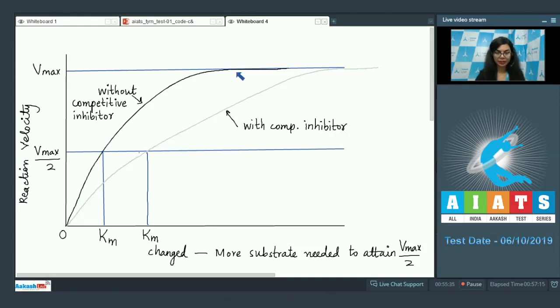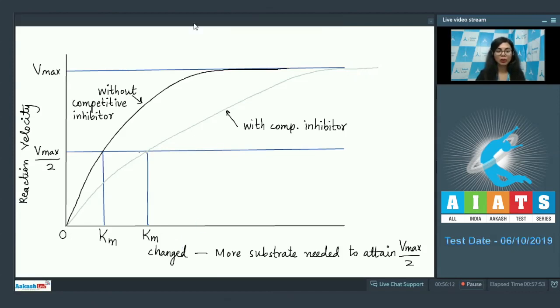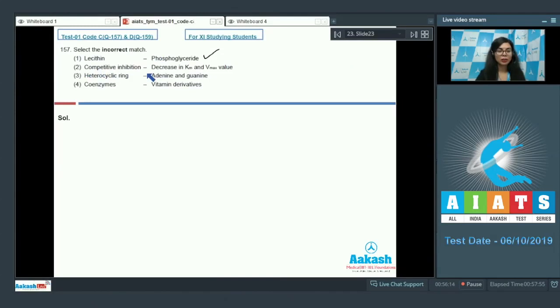With a competitive inhibitor, more substrate is needed to reach the half maximal velocity, but Vmax is still obtained. Km is changed, but Vmax is still attained. Thus Km is changed but Vmax is not changed. Option two reads decrease in Km and Vmax both. That's what makes it incorrect.